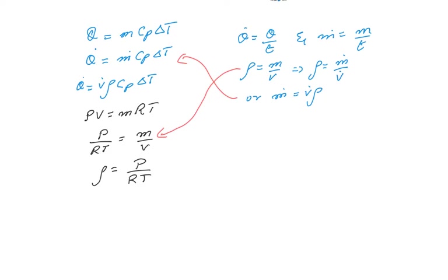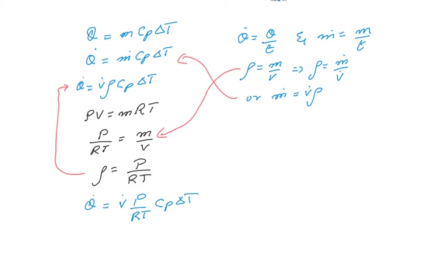Now if we replace density with P over RT in our equation, we get Q-dot equals V-dot, the volume flow rate, multiplied by P over RT, multiplied by Cp, multiplied by delta T.